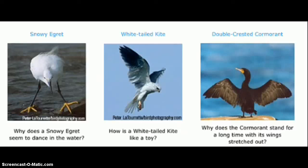The first one is a snowy egret. It's actually stirring its toes in the water to attract fish, then it gets the fish — that's how it gets food. The middle one is a white-tailed kite, and it hovers like a kite floating in the air; its sharp eyes are looking down below to find something to eat, and then it pounces on it. The third one is a double-crested cormorant. Most birds have waterproof feathers, but this one doesn't — its adaptation is that it can actually dive down and get fish.